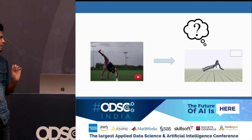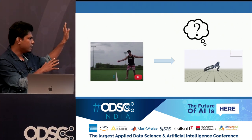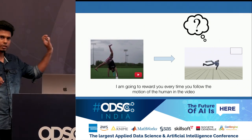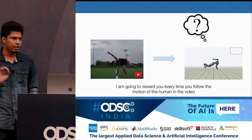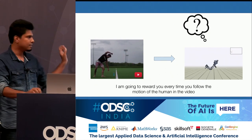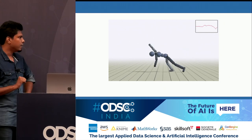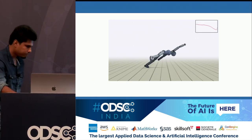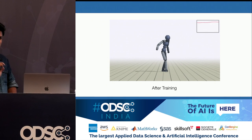The only thing it is doing is falling spectacularly from all positions. The idea is that you show this robot a video of a person doing a motion called a cartwheel, and you tell this robot: I am going to reward you every time you follow the motion of the human in the video. This robot is a very selfish robot, so it wants to do all it can to maximize its rewards. You come back and see it's trying to do something like a cartwheel, but it's not able to nail its landing. Given some more time, it has successfully learned how to do a cartwheel.